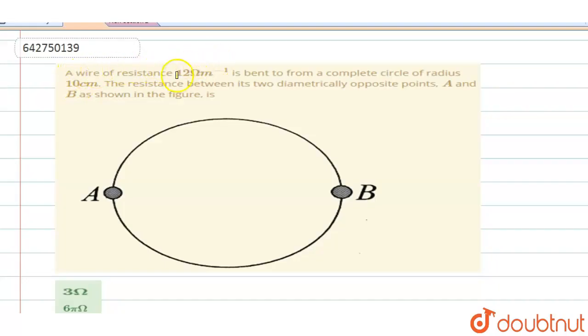A wire of resistance 12 ohm per metre is bent to form a complete circle of radius 10 centimetre. The resistance between its two diametrically opposite points A and B as shown in figure is.